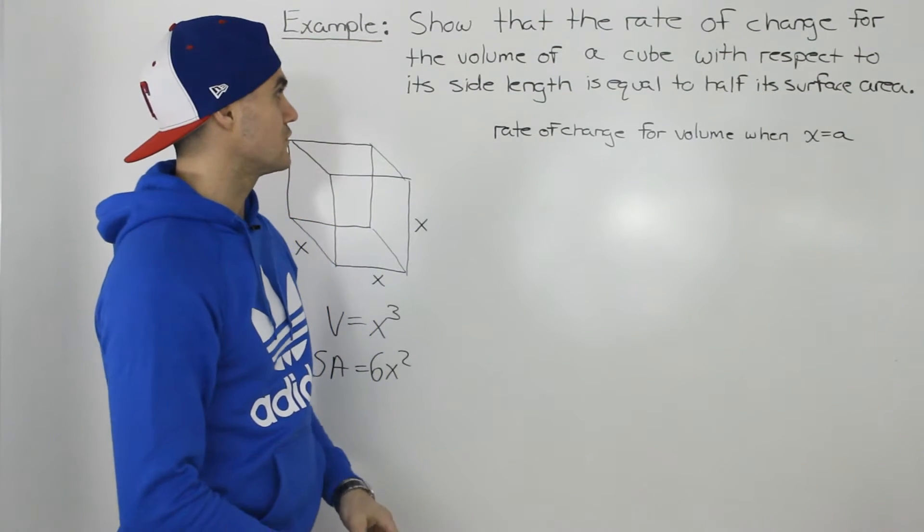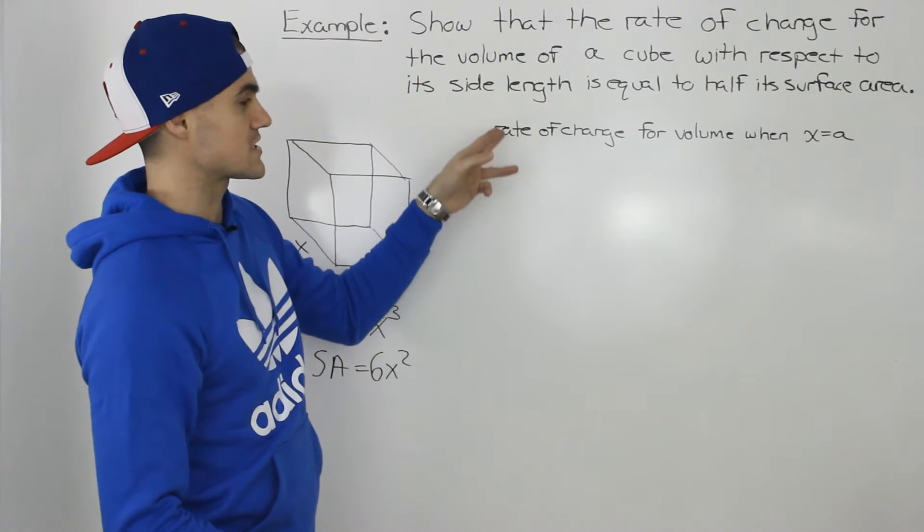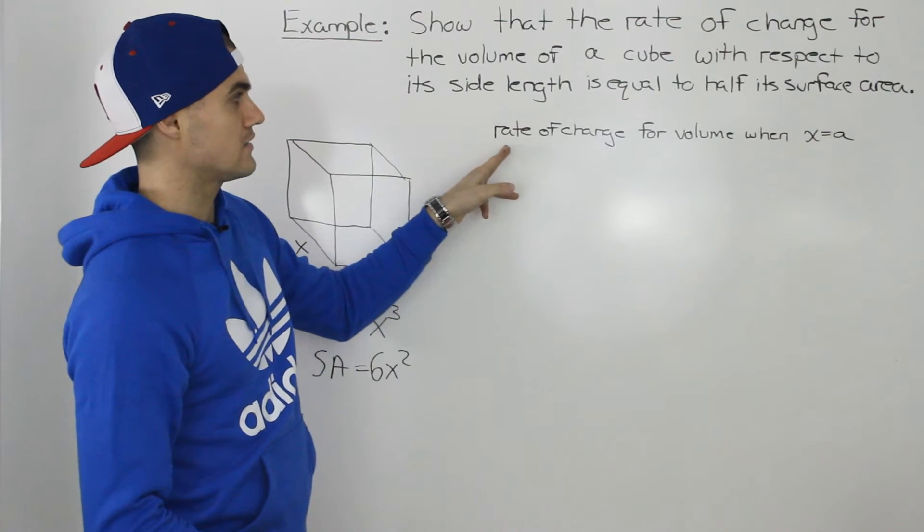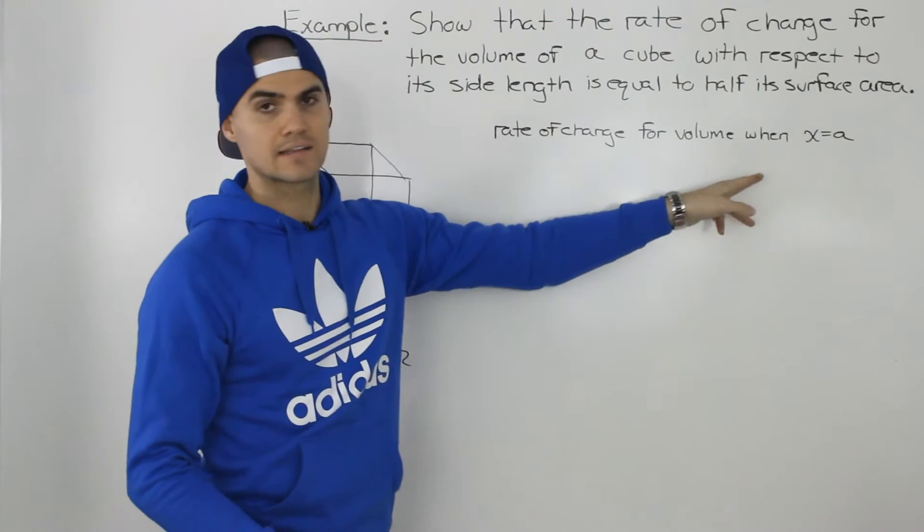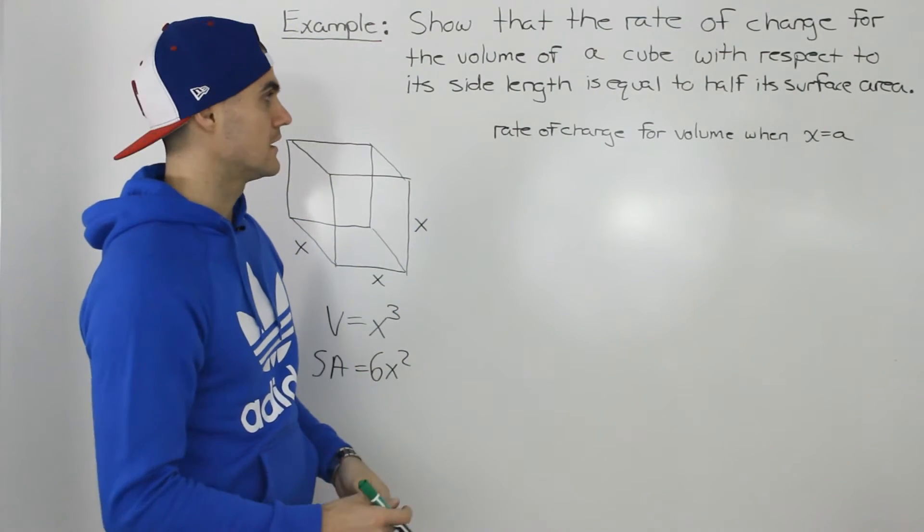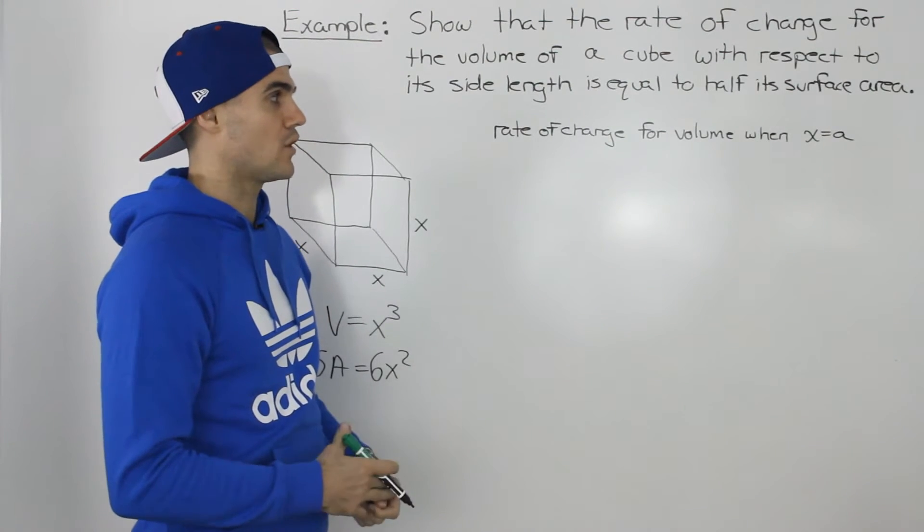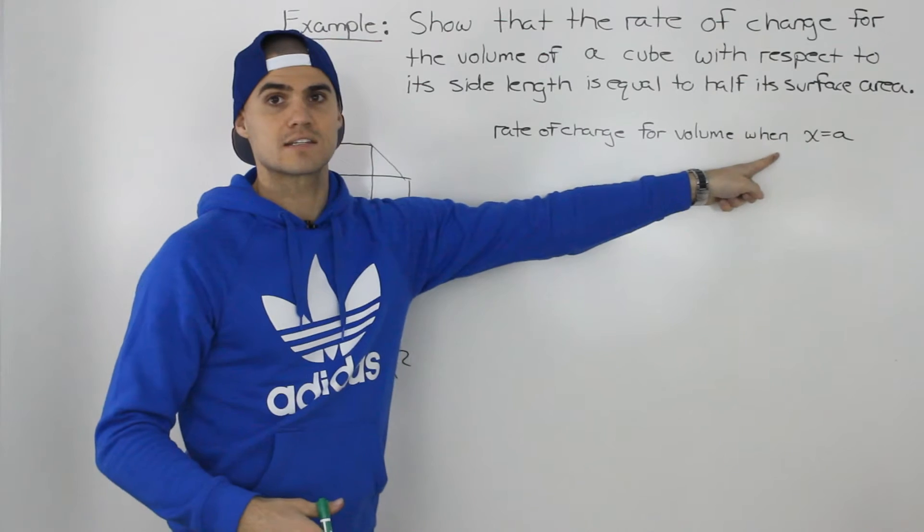So if you notice we have to find the rate of change for the volume with respect to its side length. So we have to find the rate of change for the volume when the side length is some variable a or some length a. So we have to find the instantaneous rate of change for the volume when the side length is a.